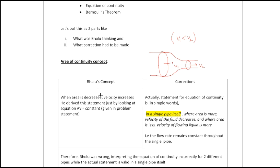Whereas what Bholu did is he applied this concept wrongly in two different pipes, keeping the first as area A and second as 10A, and thinking that from pipe A velocity will be much faster. This is not going to happen. Therefore Bholu was wrong, interpreting the equation of continuity incorrectly for two different pipes, while the actual statement is valid in a single pipe itself.